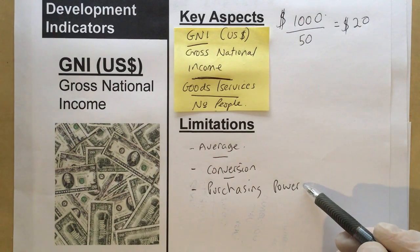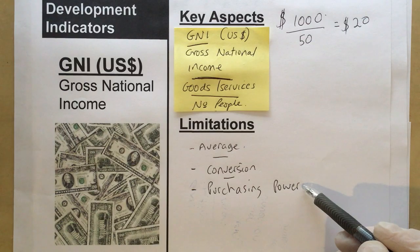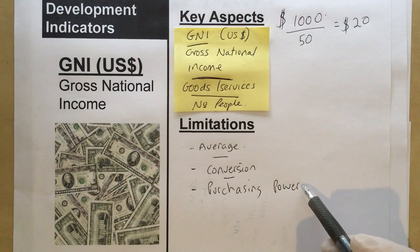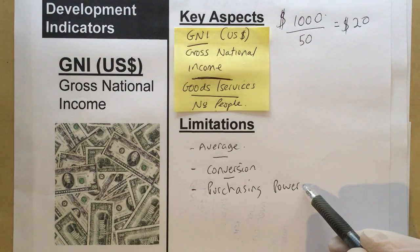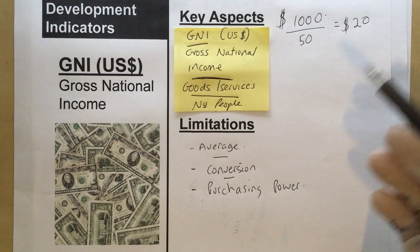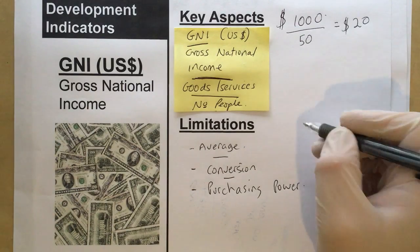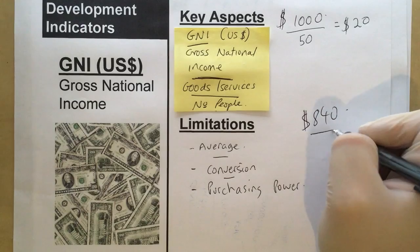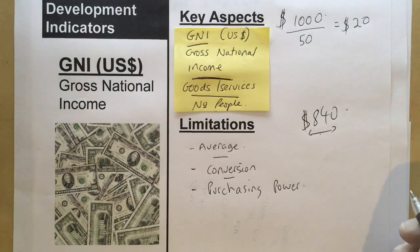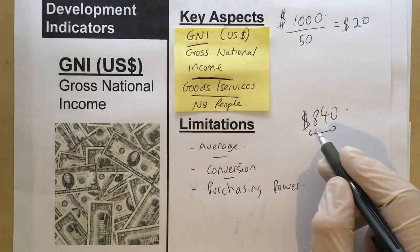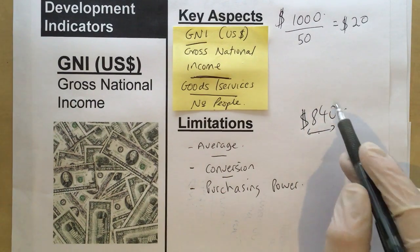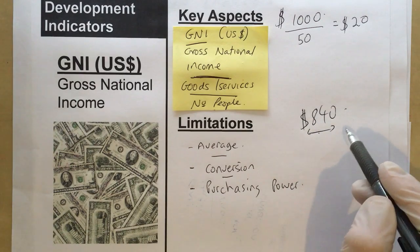Finally, there's purchasing power. A pound in our country buys a certain amount, but in some countries a pound buys an awful lot more because the cost of goods is lower. In other countries, that pound might buy very little because it's worth less there. For example, a GNI of $840 per person might look low, but in some countries that $840 actually gives you a lot of purchasing power because the cost of goods and services is quite low.